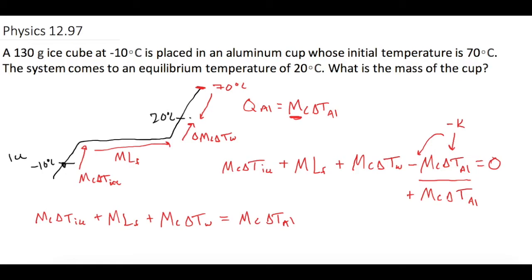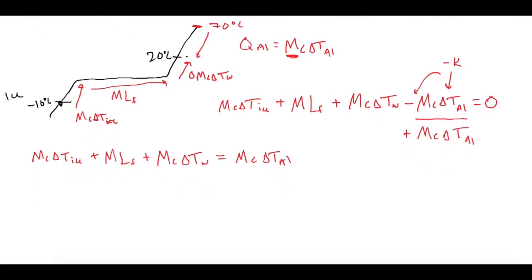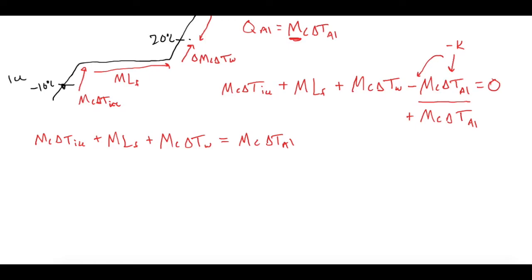And since we don't know what the aluminum is, we're going to figure out how much the mass of the aluminum is in order to do all that. So let's divide both sides by c∆T of aluminum. This is going to equal the mass of the aluminum pan.